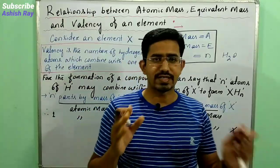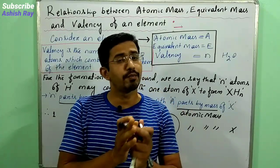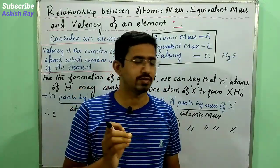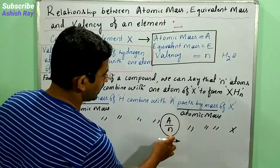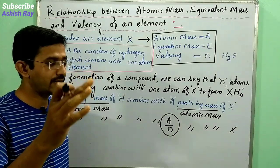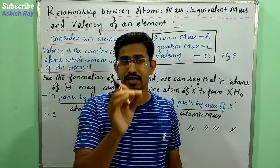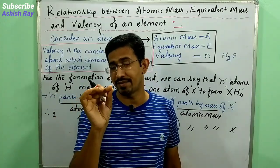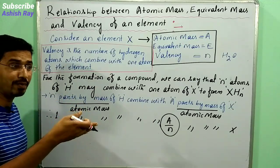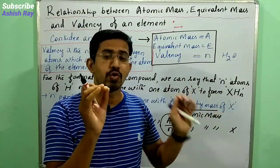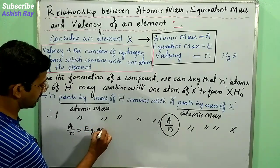We already know that equivalent mass of a substance is the number of parts by mass of that substance combined with one part by mass of hydrogen. So here, one part by mass of hydrogen is already combined with A/N parts by mass of X. Therefore, A/N is the equivalent mass.